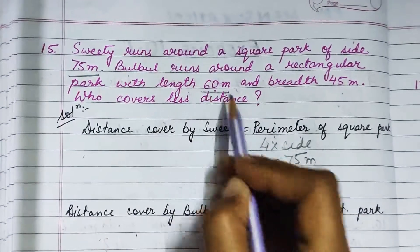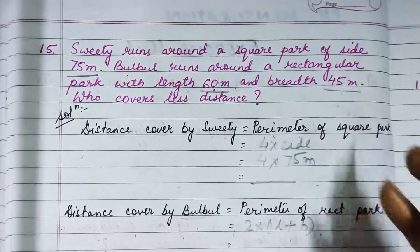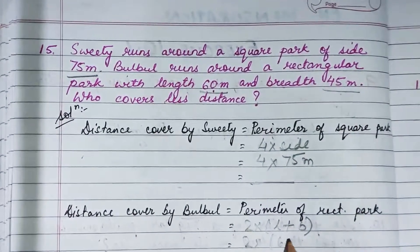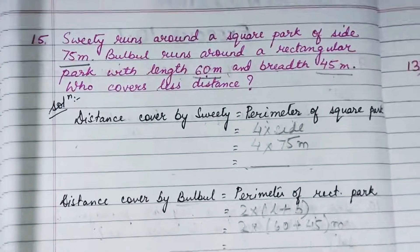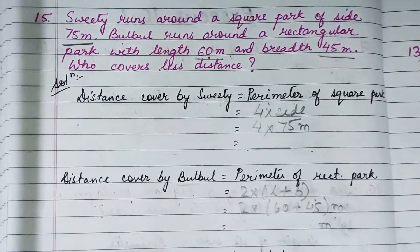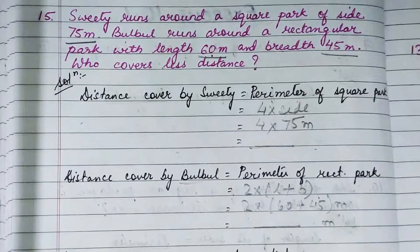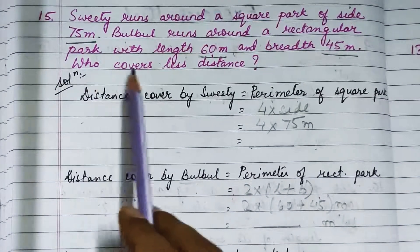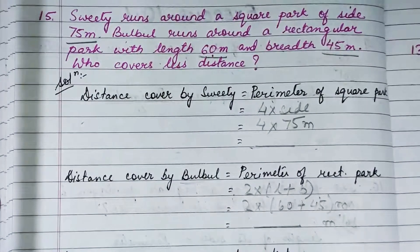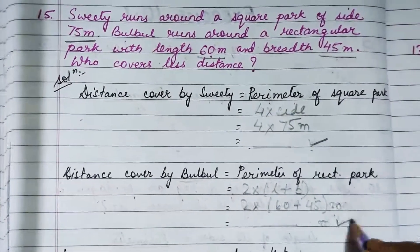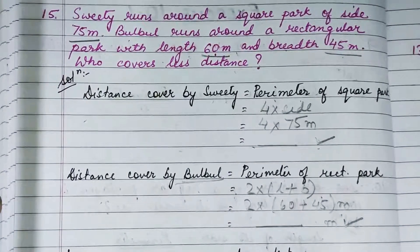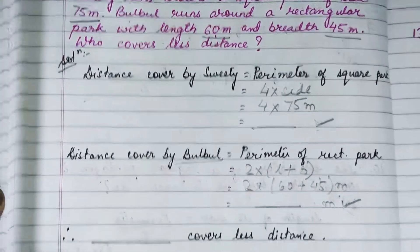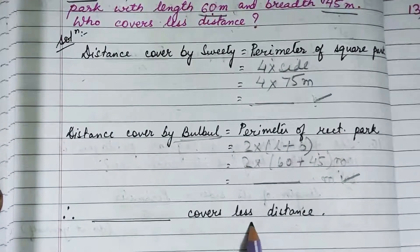Length is 60 meters and breadth is 45 meters, so it is 2 into (60 plus 45) meters. Calculate this to find the total distance covered by Bulbul. The question asks who covers less distance. To find the answer, compare the two values — you will find that Bulbul covers less distance.